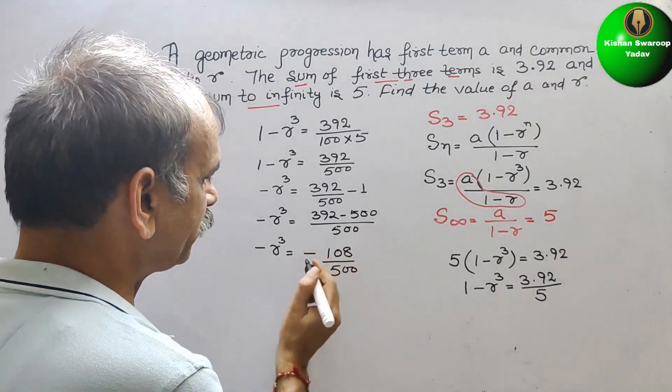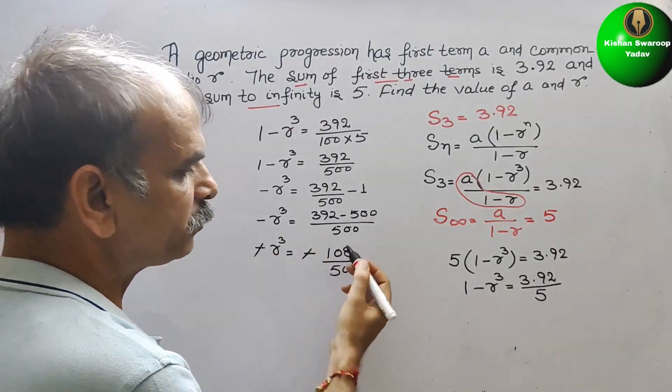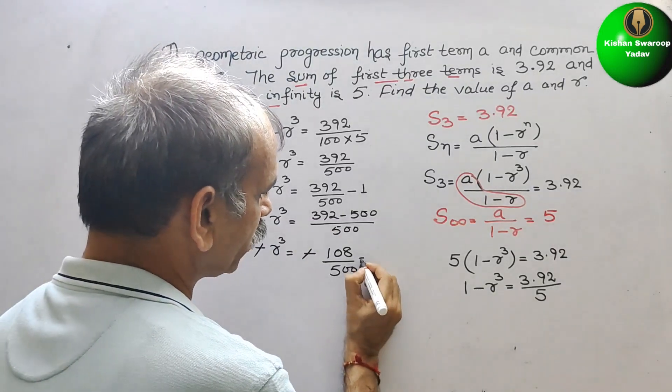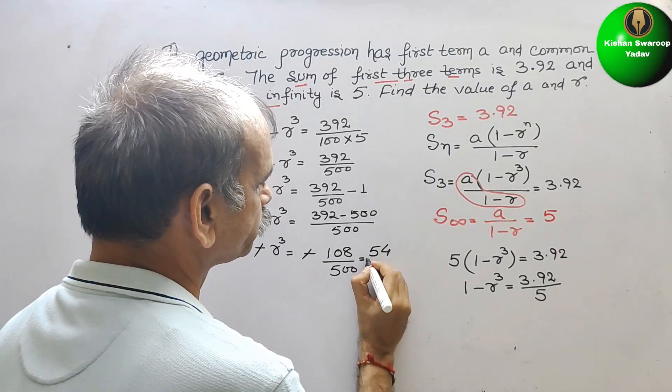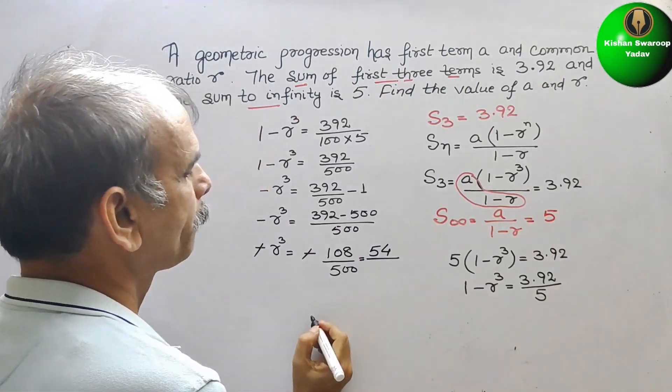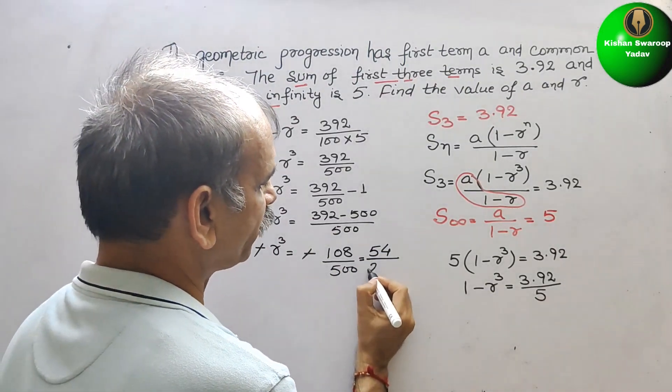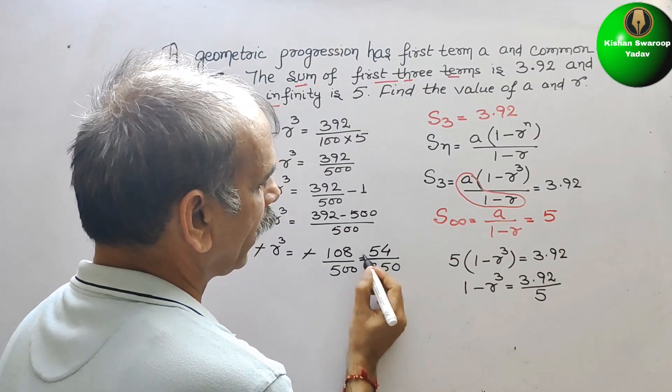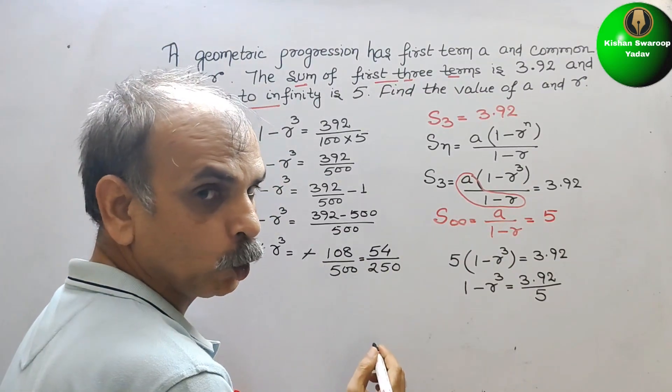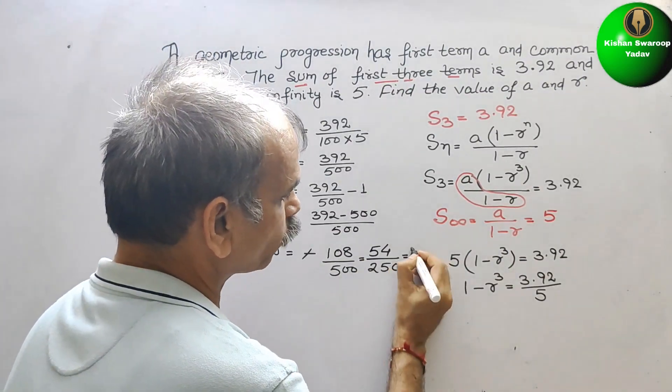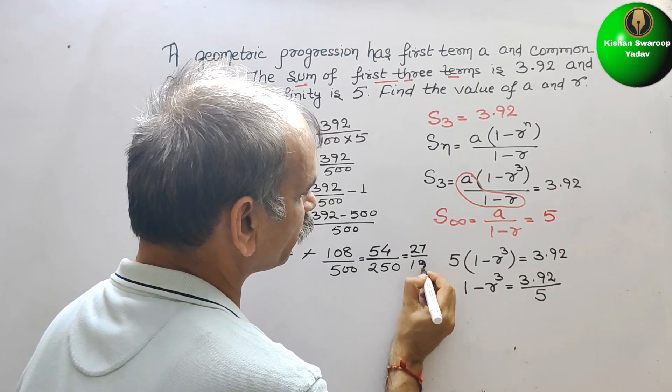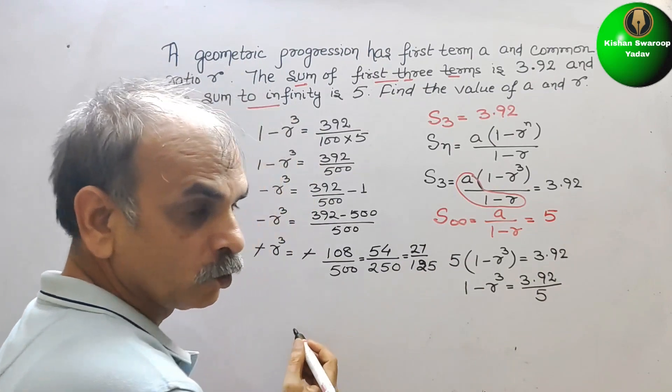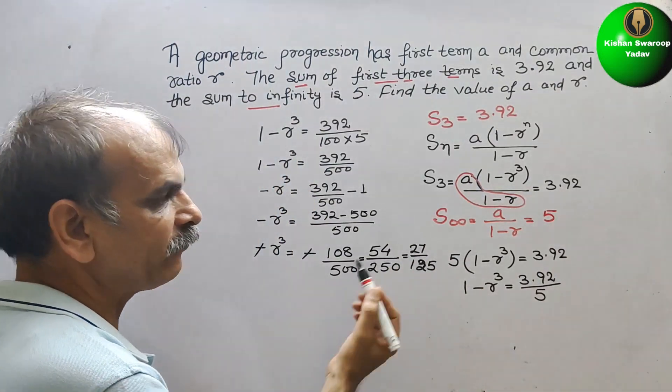Reduce it by minus and minus. Reduce it by 2. If you reduce it by 2, it will be 54 by 250. Again reduce it by 2. It will be 27 by 125.